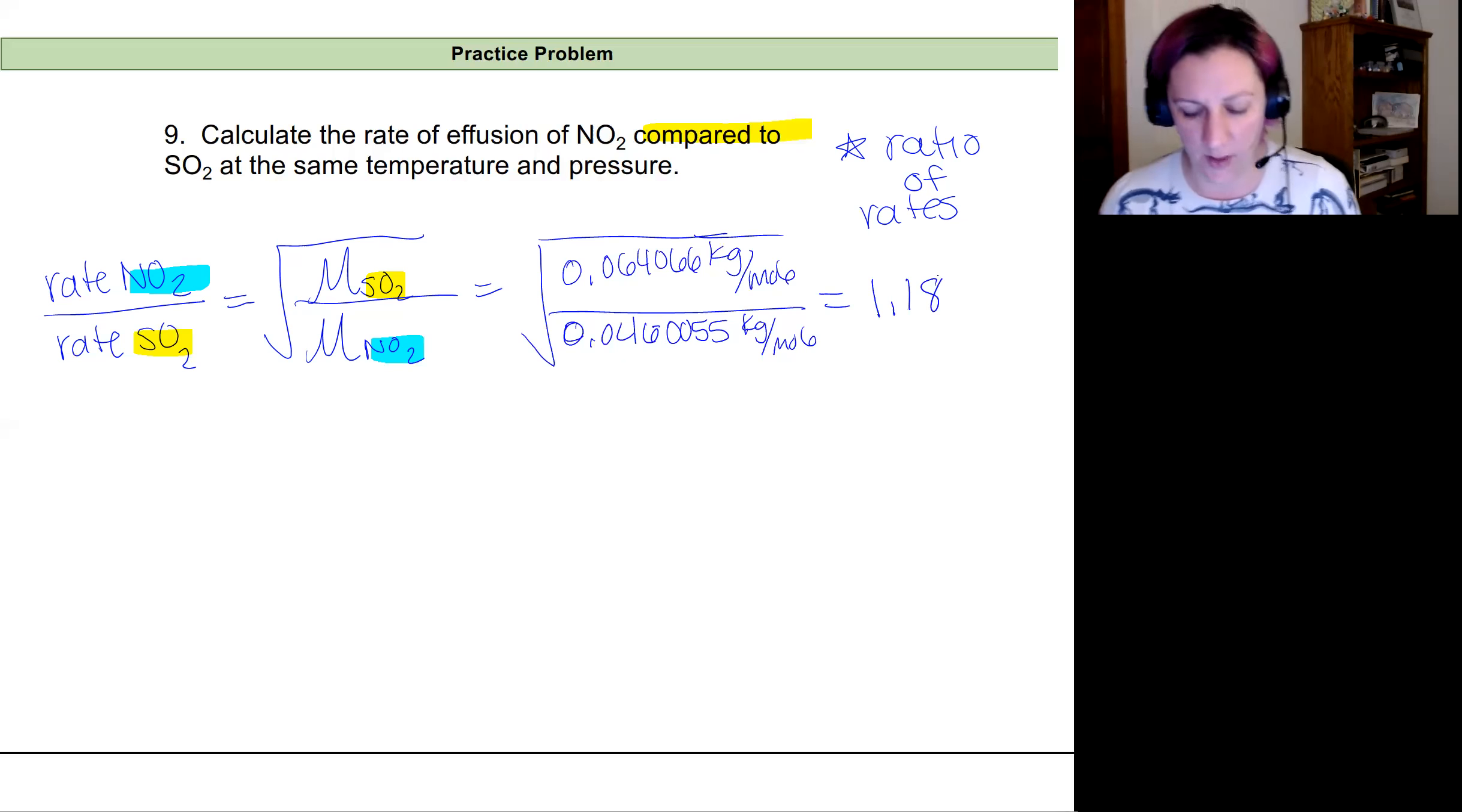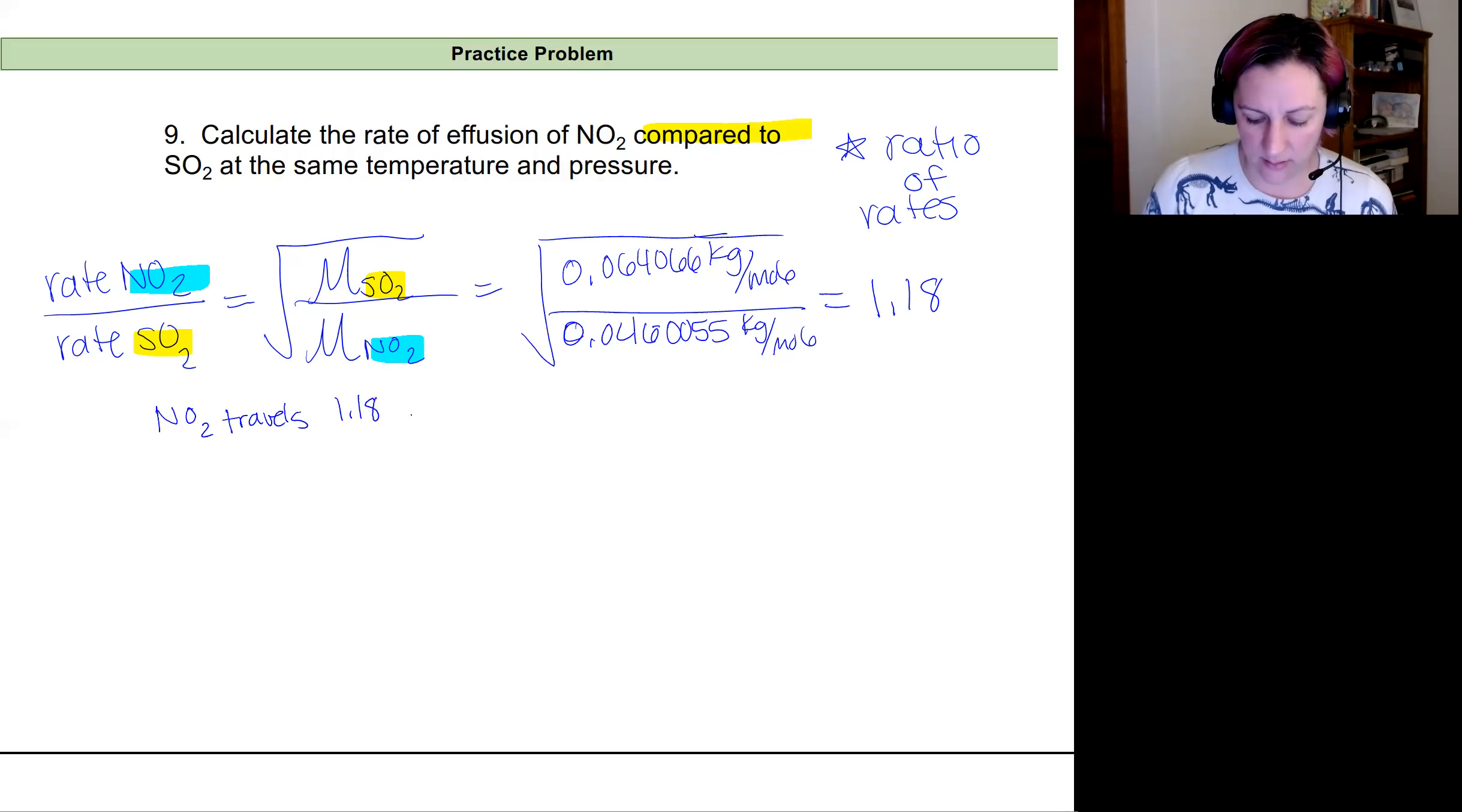And the way I would interpret that 1.18 is that NO2 travels 1.18 times the rate of SO2.